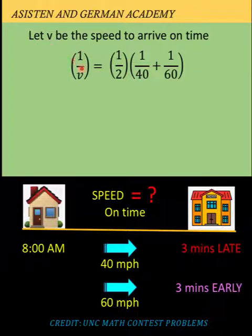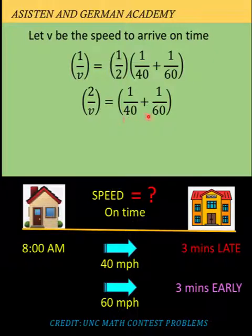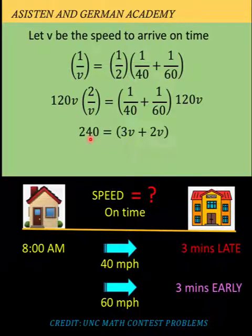That harmonic mean is equal to 1 over v, the reciprocal of the desired speed v. Our task now is to solve for v. First, let's do away with the 1 half by multiplying both sides by 2, so we arrive at 2 over v equals 1 over 40 plus 1 over 60. To further simplify, we multiply both sides by the LCD, which is 120v. On the left side we arrive at 240, and distributing 120v to the right side we arrive at 3v plus 2v. Adding gives us 5v, then dividing both sides by 5.